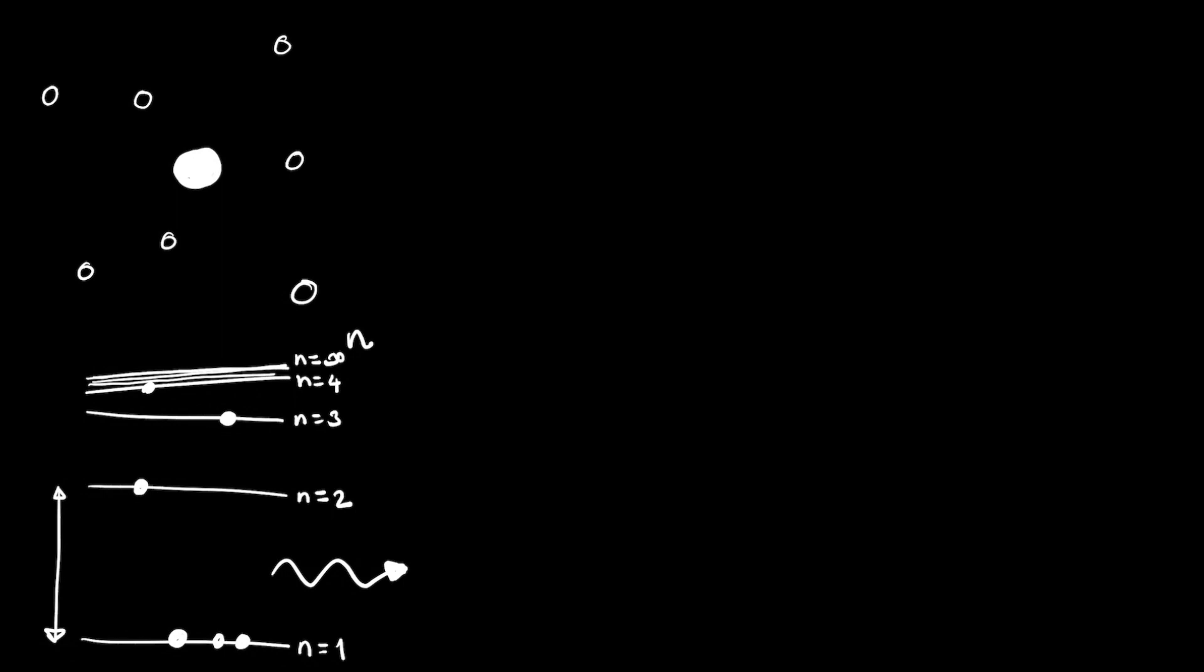So if we can write this as an equation, we can write that delta E, which is the difference between two energy levels, we can write this maybe as the E2 minus E1, the difference between two energy levels is equal to hf. And hf is the energy of the photon.